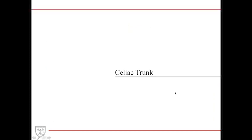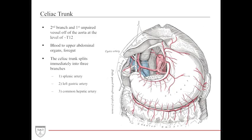The celiac trunk is considered the second branch and the first unpaired vessel off of the aorta, branching at the level of T12 almost immediately as the abdominal aorta passes through the diaphragm. It is very important for all the upper abdominal organs in the foregut. It splits immediately into three branches: the left gastric, the splenic, which goes toward the left upper quadrant, and the common hepatic artery off to the right.